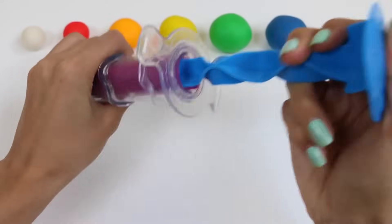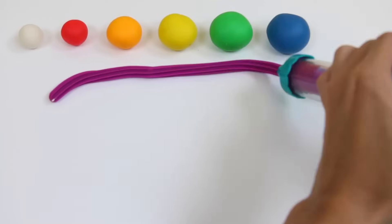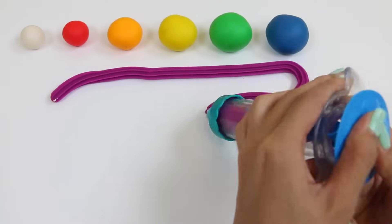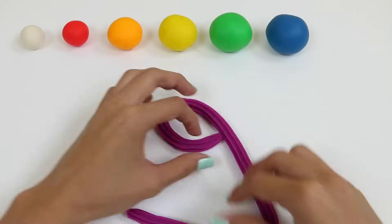We just squeeze the Play-Doh out. Whoa, look at how long that's getting. Perfect. Now let's just cut it off and then we swirl it around. This looks like grape ice cream.